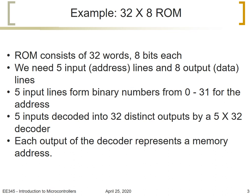We give an example of a very small ROM that consists of 32 words and 8 bits per word. So this ROM, 32 by 8 we call it, we need 5 input lines or address lines and 8 output lines or data lines.